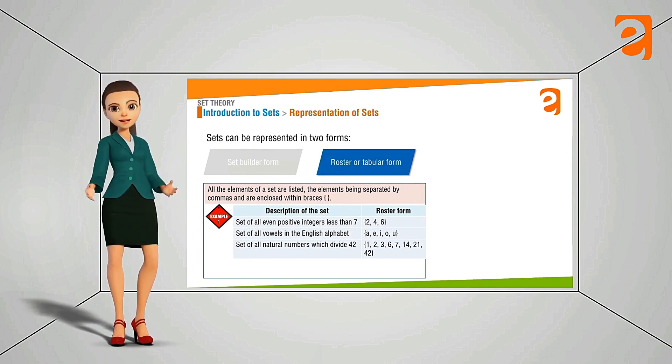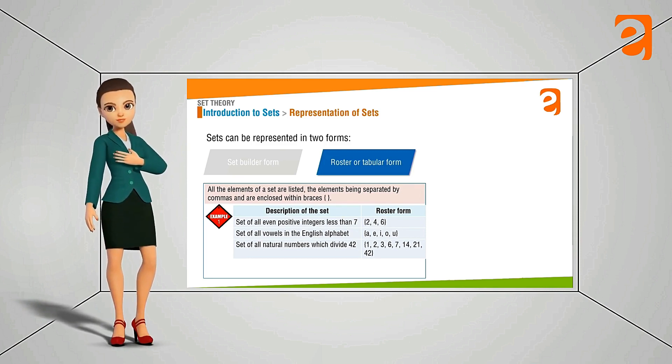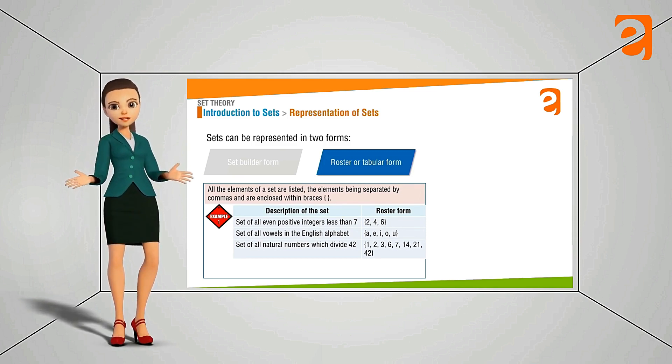Here the set of all even positive integers less than 7. So what are the set of all even positive integers less than 7? It can be only 2, 4 and 6. So we will mention it there in the curly bracket 2, 4 and 6. So this is called the roster form.